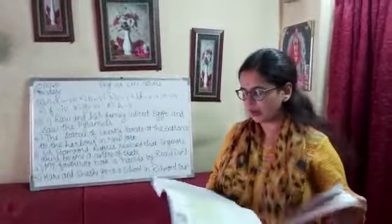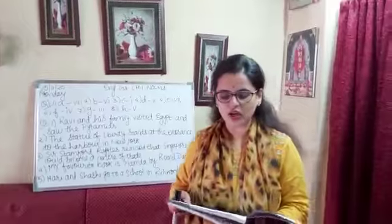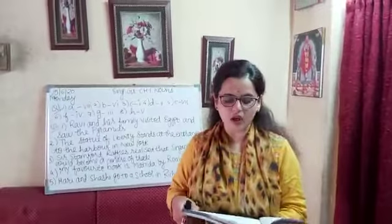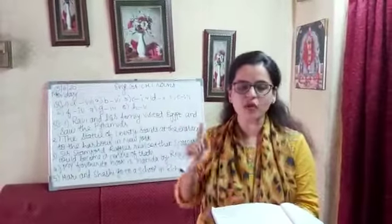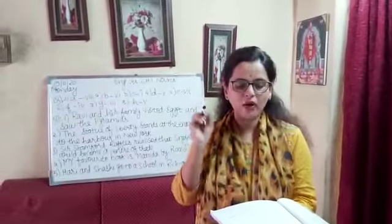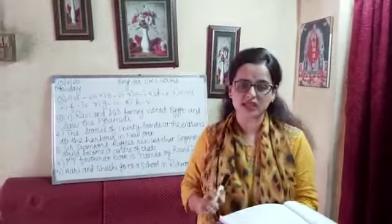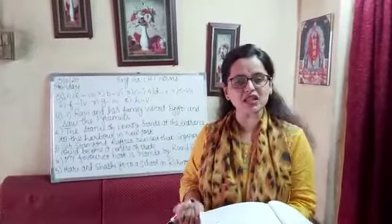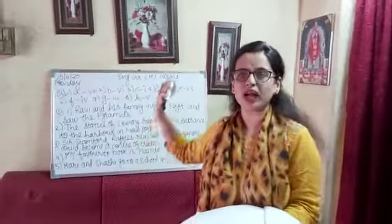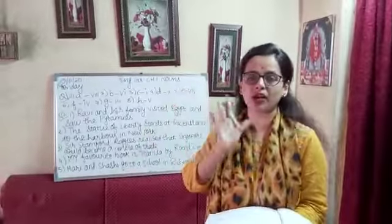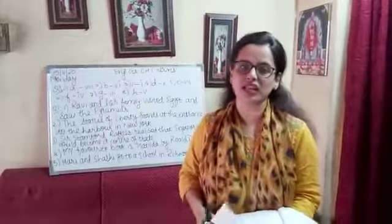With this we complete question number one and two. Question number C asks you to circle the singular noun and underline the plural noun in the sentences. I want everyone to try question number three and four on your own, as it is similar to what we did in class four. Please copy everything I have written on the board into your grammar textbook, and in the next class I will give you the answers.